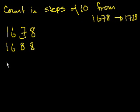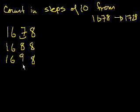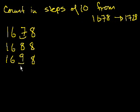We just added 10. Let's add 10 more — we get 1,698. And now if we just incremented this digit by 1, we'd get a 10 there. But you can't have 10 tens written that way. What happens when you have 10 tens? That means you have an extra 100 — 10 tens equal 100.